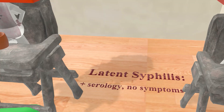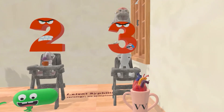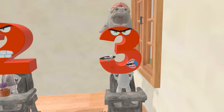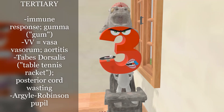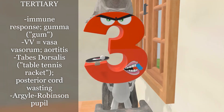Here we have son number three representing tertiary syphilis. In tertiary syphilis, there's an immune response led by T-cells. In some cases, immune cells huddle together and form a granulomatous lesion called a gumma. That's why this third brother is chewing gum — to remind us of gummas. The tissue at the center of the gumma can end up without oxygen and lead to coagulative necrosis.